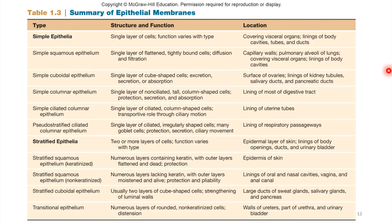One last thing about epithelial tissue: it can be quite specialized. Let's talk about glands for just a moment. Epithelial tissue can be specialized to secrete — glands secrete things. We're going to encounter two major types of glands in this class: endocrine glands and exocrine glands.